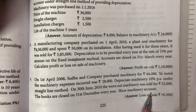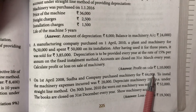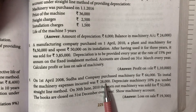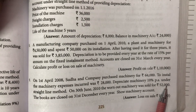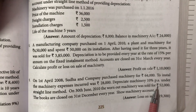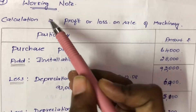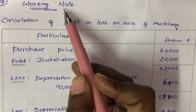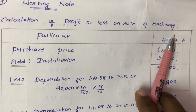We need to show the machinery account. In this problem, we are given the machinery purchase price and installation cost. The machinery is sold for Rs. 52,000. When there is a sale, we need to find whether there is a loss or profit. First, let us prepare a working note: Calculation of Profit or Loss on Sale of Machinery.